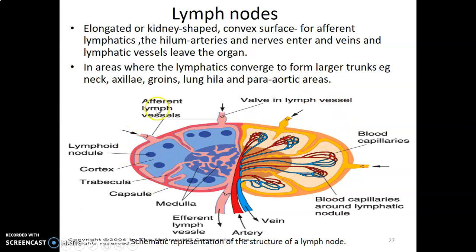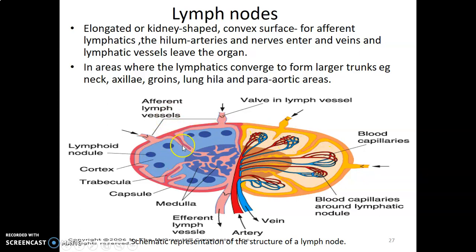The lymph node is kidney-shaped with a convex area where afferents come in and a concave hilum where efferent lymphatics exit. It has a capsule, and beneath the capsule is a subcapsular space. The capsule sends in septa that divide the gland, and these septa carry lymphatics. There is an outer cortex containing lymphoid nodules and an inner medulla with medullary cords and sinusoids.